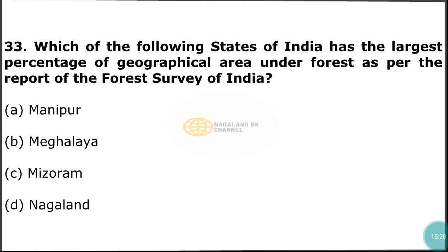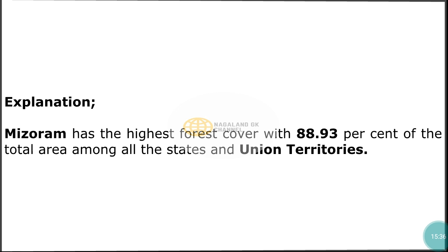Question number 33, the last question: Which of the following states of India has the largest percentage of geographical area under forest, as per the report of the Forest Survey of India? The correct answer is option C — Mizoram. Mizoram has the highest forest cover with 88.93% of the total area among the states and Union Territories. Thank you for watching. If you liked the video and gained something from it, please subscribe to the channel, press the notification icon, and don't forget to like, share, and comment. See you in the next video.